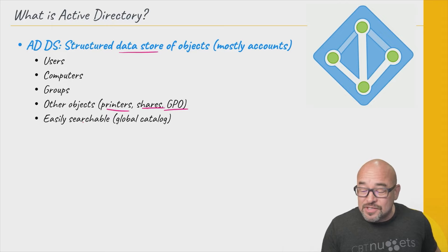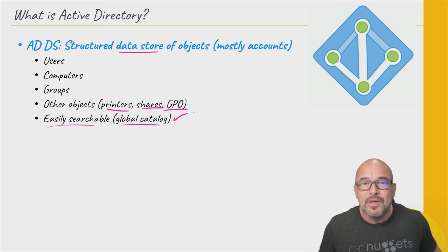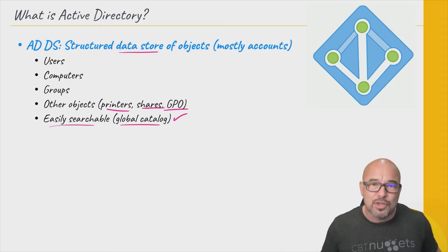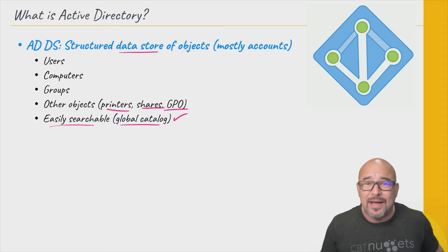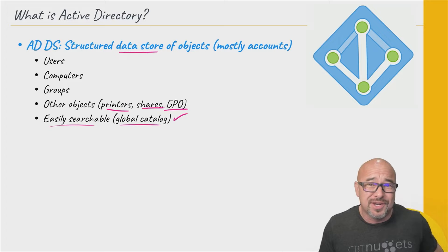Active Directory is easily searchable. A big part of the reason for that is something called the global catalog, which has every object that's in Active Directory. Because of the nature of it and the way it's stored, it's very easy and fast to search against. Your users don't have to know about that — even we as administrators don't have to know we're searching using the global catalog. We just do a search and we get results.